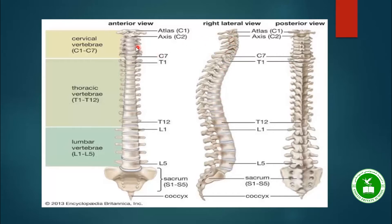The vertebral column has five main areas: the cervical area, thoracic area, lumbar area, sacral area, and coccygeal area. In the cervical area, the first two vertebrae, C1 and C2, are called the Atlas and Axis.